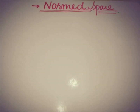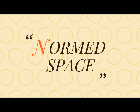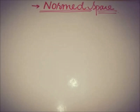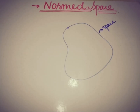Hello everyone, this is DA from eacademy, and today we are going to see normed spaces. As we know about vector spaces, topological spaces, and metric spaces — the concept is that if we have a space, it is said to be a vector space if it satisfies 10 axioms: 5 of them are of addition and the rest are related to scalar multiplications.